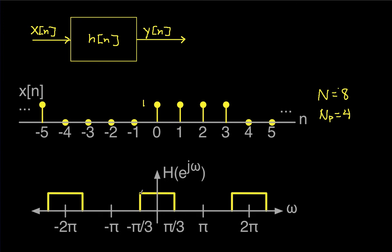The frequency response of the filter is 0 between π/3 and 5π/3, and non-zero with a value of 1 between these values. Because we're dealing with discrete-time signals, the Fourier transform is periodic — you can see the passband repeating with a period of 2π. We want to find the Fourier transform of x, then compute the Fourier transform of y as their product, and take the inverse Fourier transform to see what y looks like.